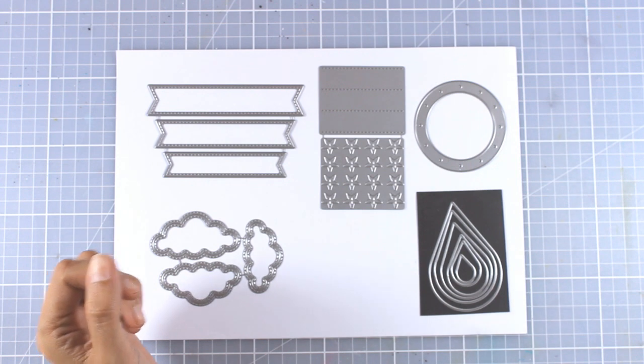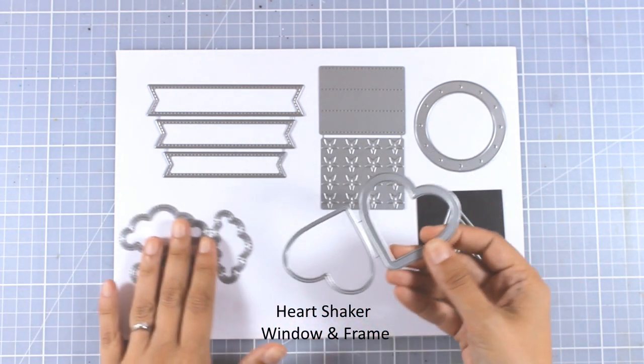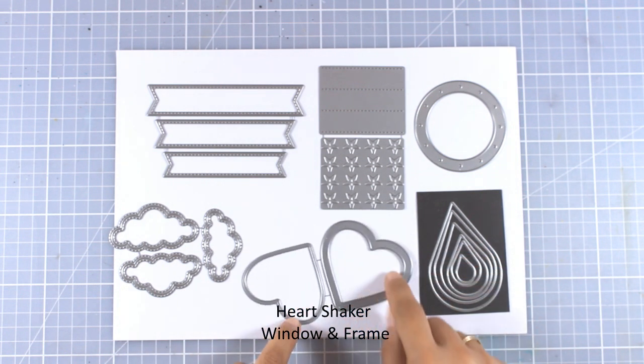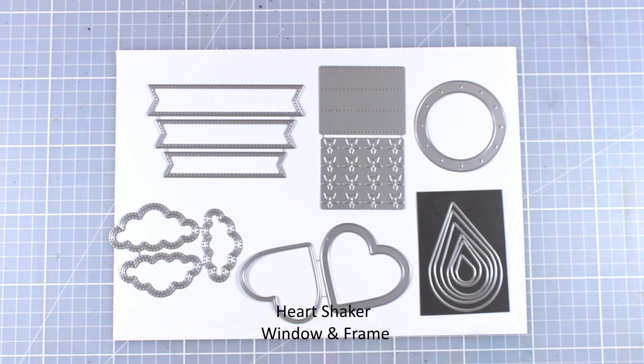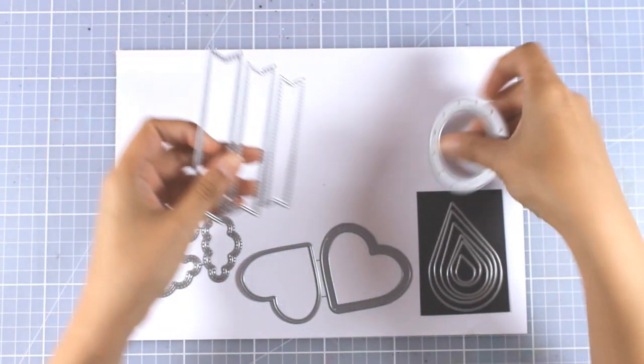Another very versatile die is this one, called Heart Shaker Window and Frame. It comes with two designs: one cuts out a frame and the other cuts out only the shape of the heart. It is really perfect for creating shaker cards.